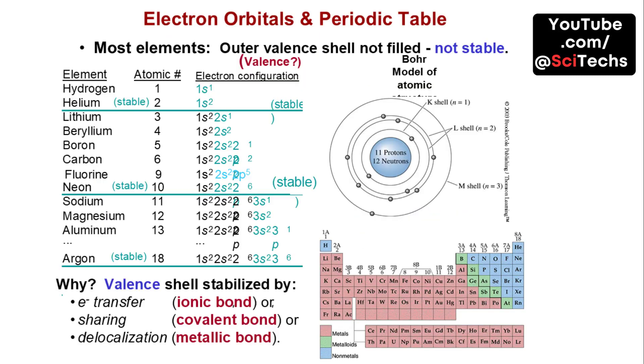Most elements have outer valence shells that are not fully stable. Valence shell stability can be achieved through electron transfer, sharing, or delocalization, leading to ionic, covalent, or metallic bonds.